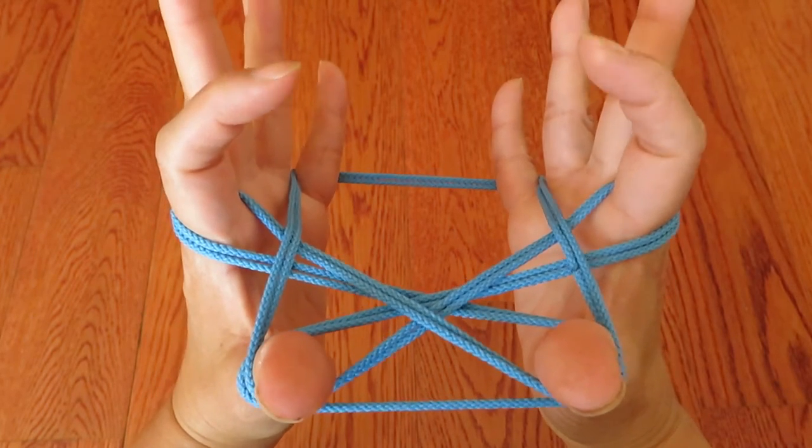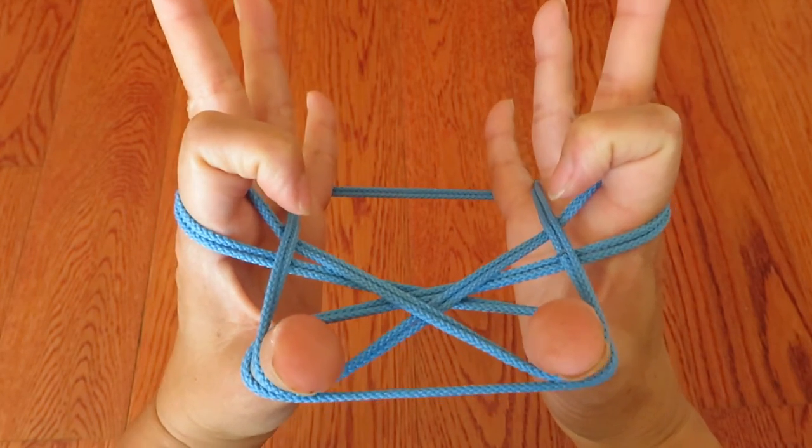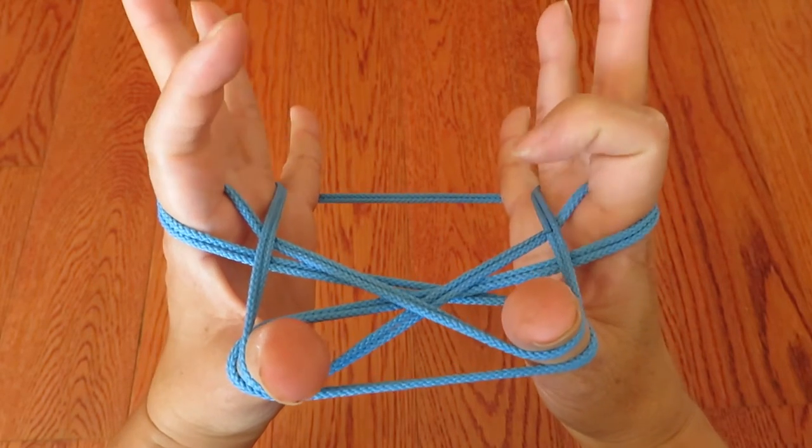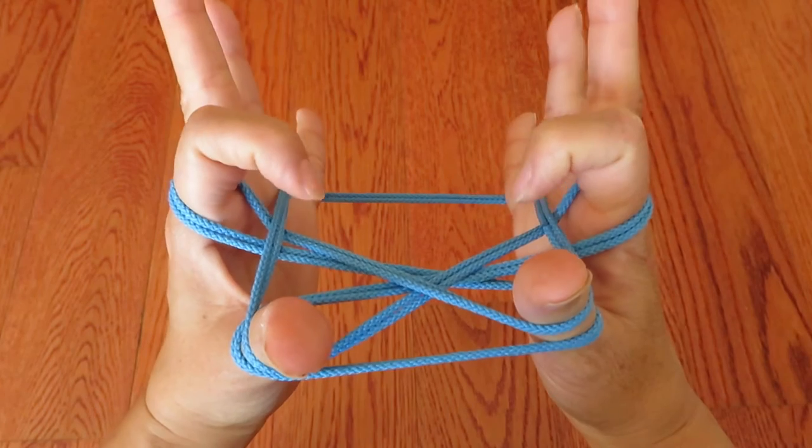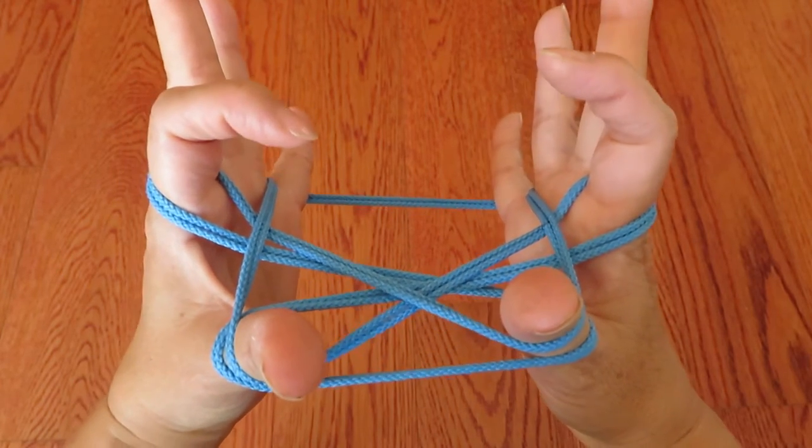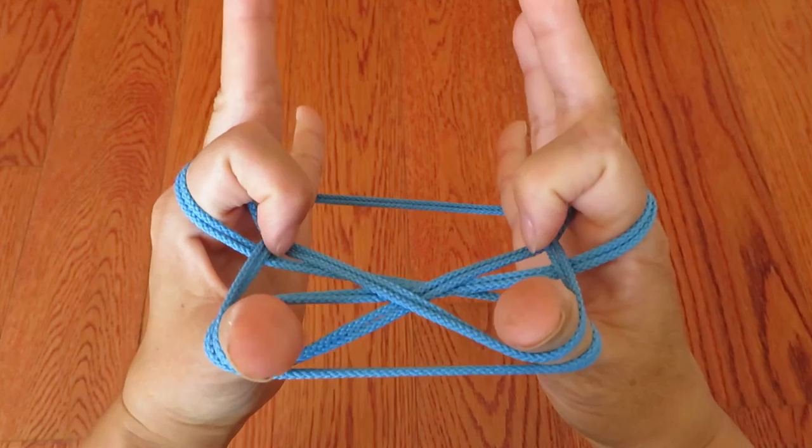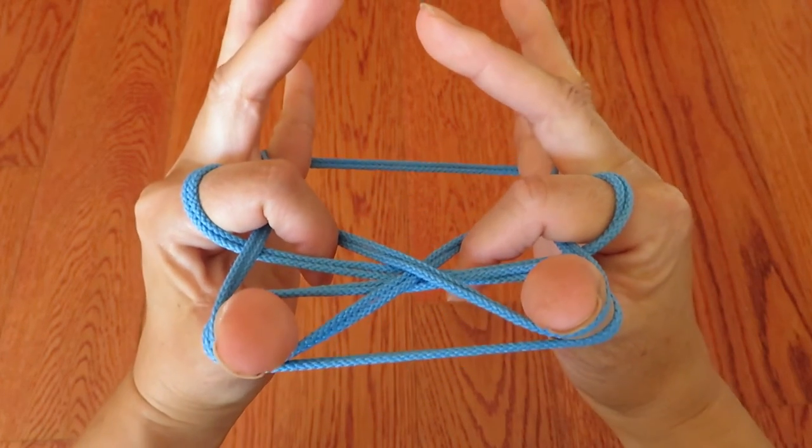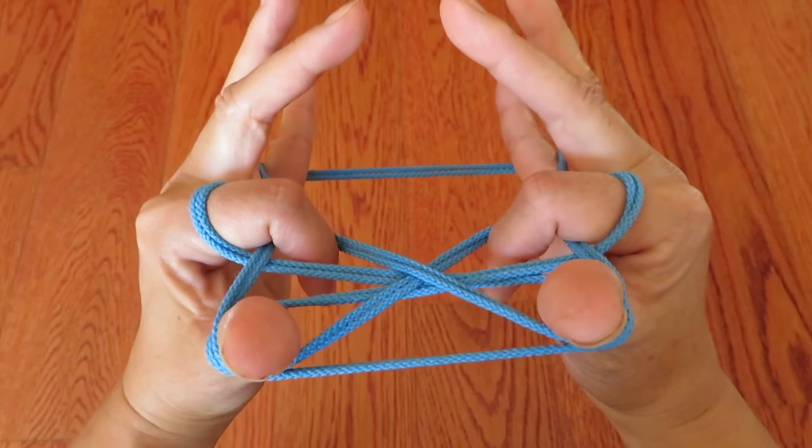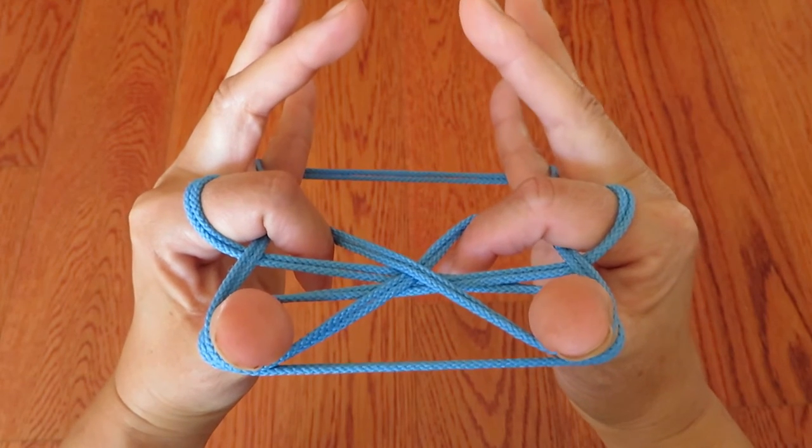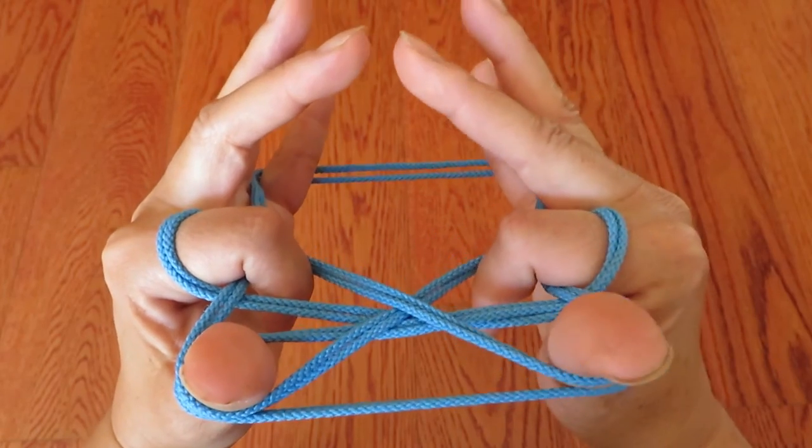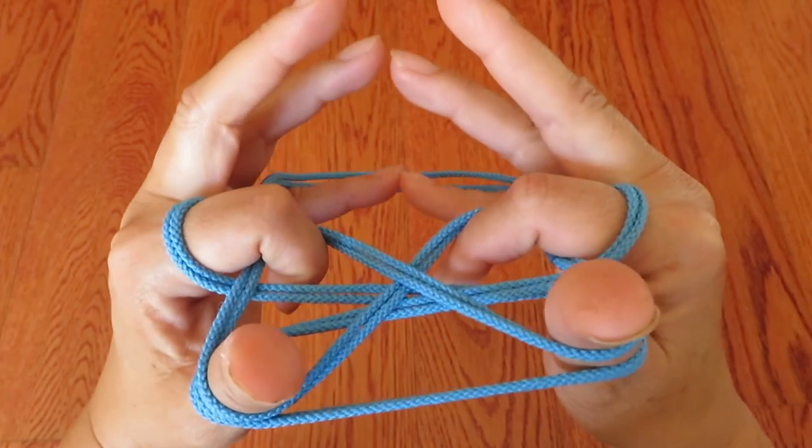And there are these triangle spaces in between both pointers right here, and we're going to put both pointers in that triangle spaces right here. But at the same time, slowly let the pinky strings, double strings, go like this slowly.